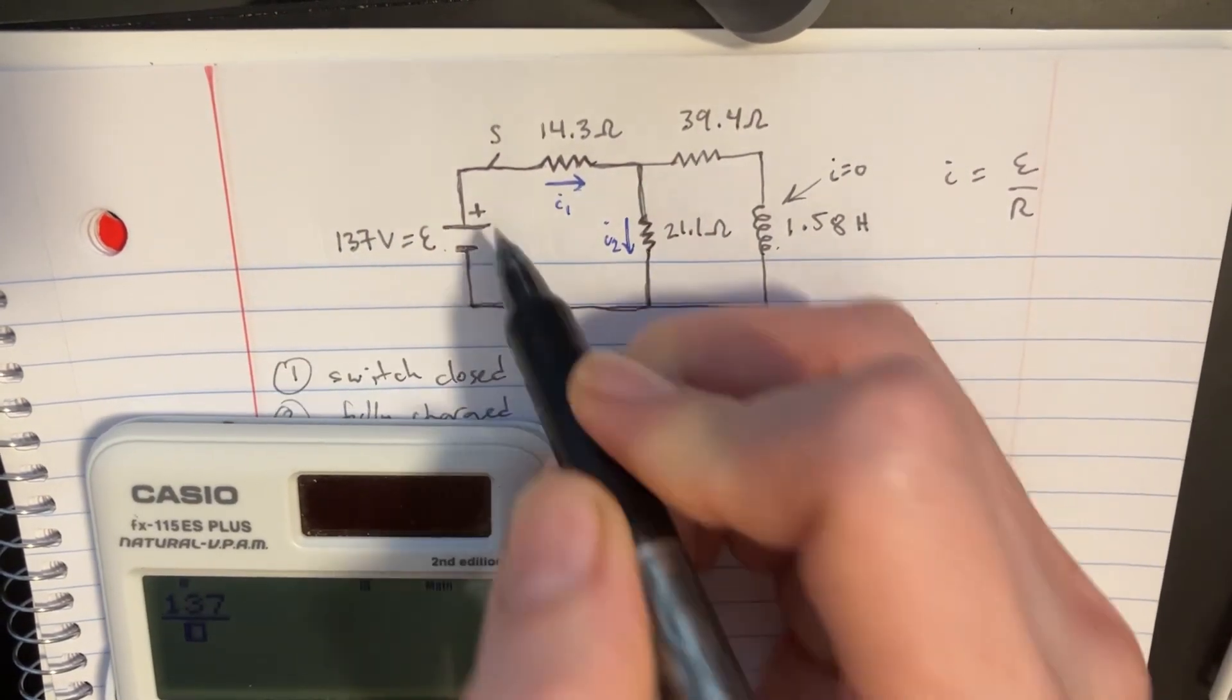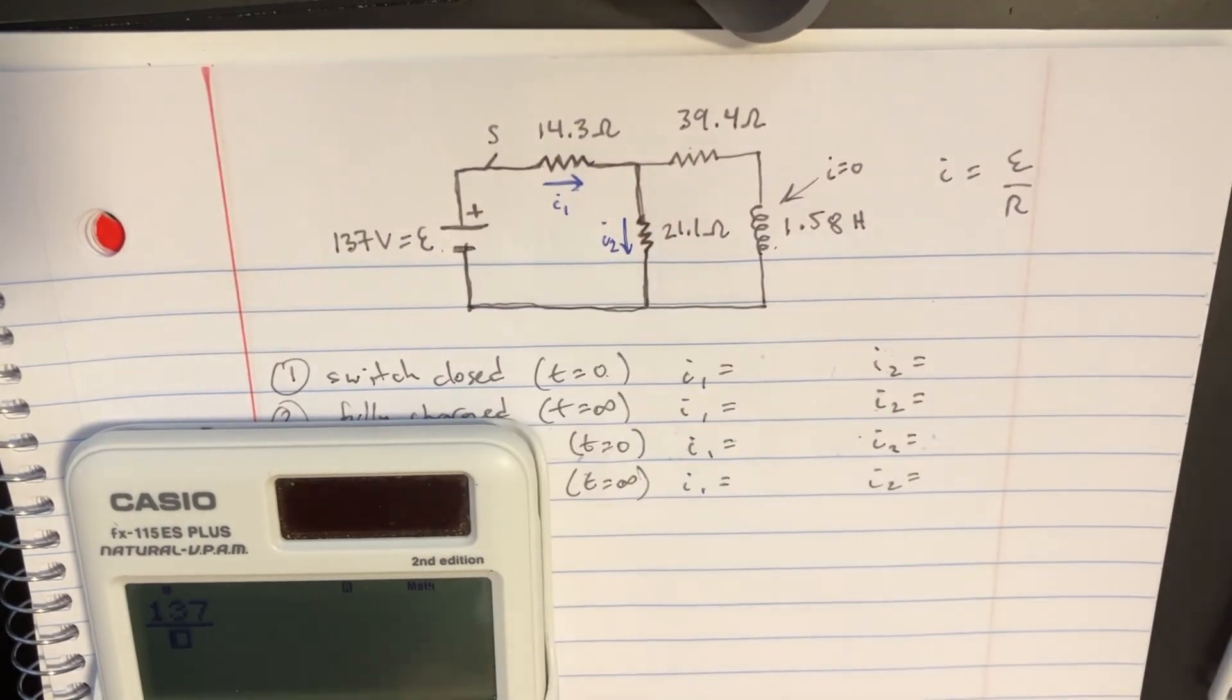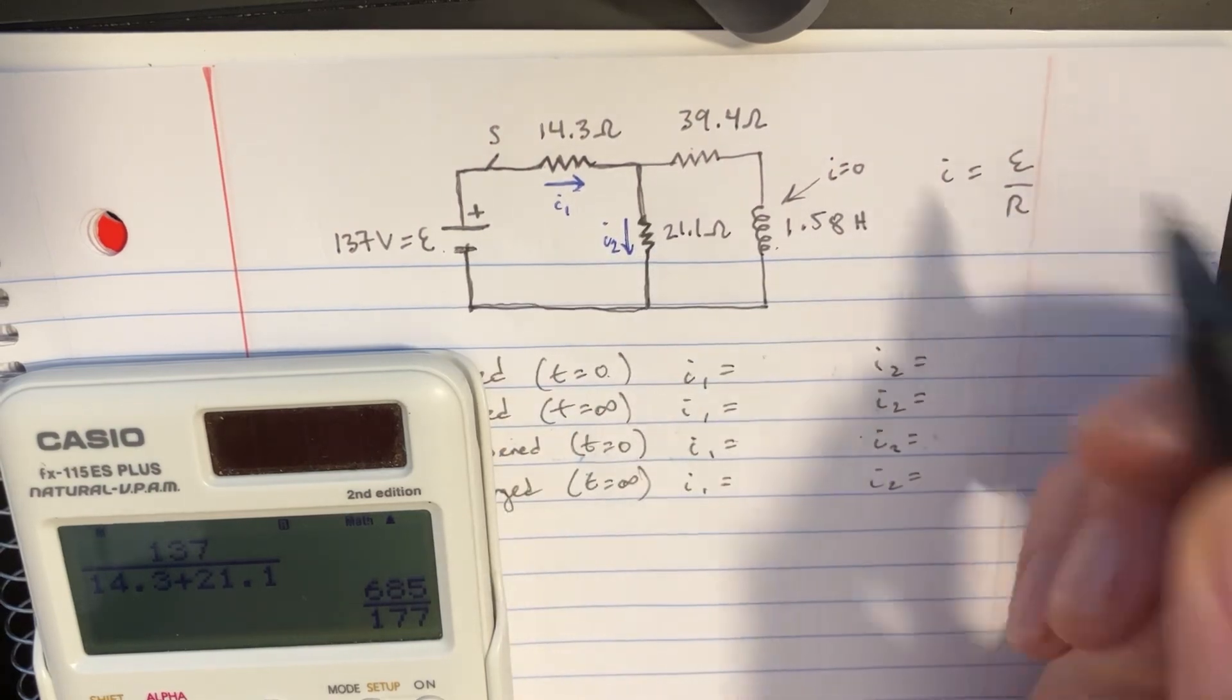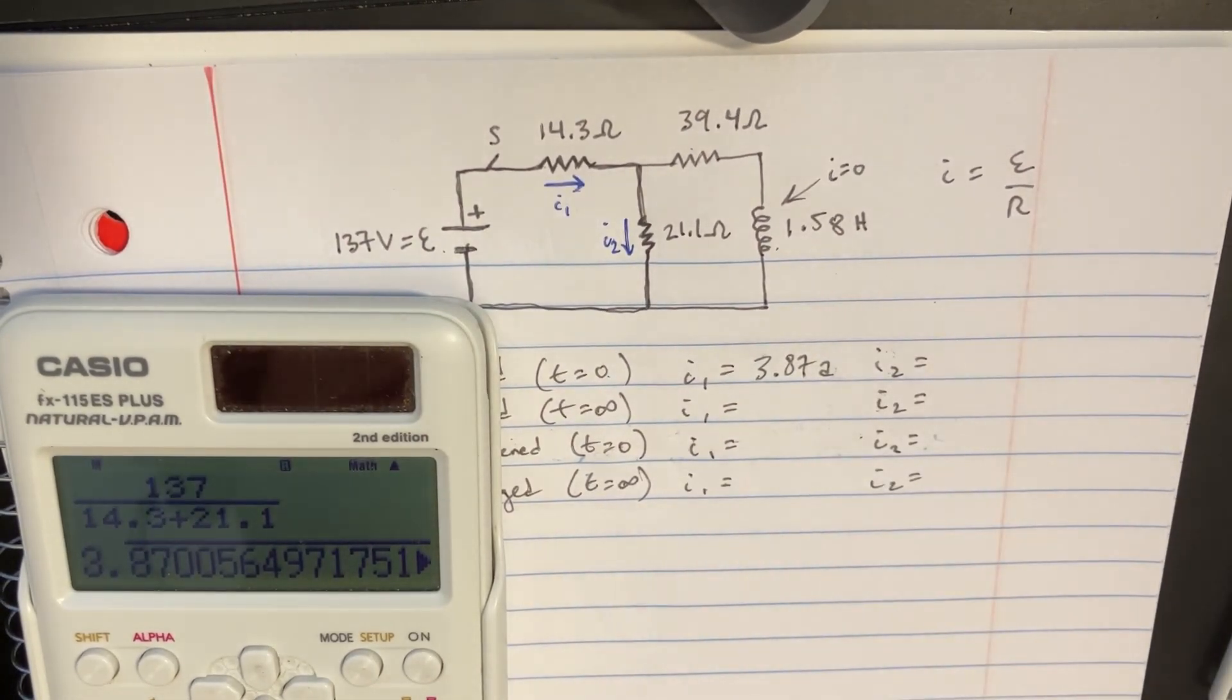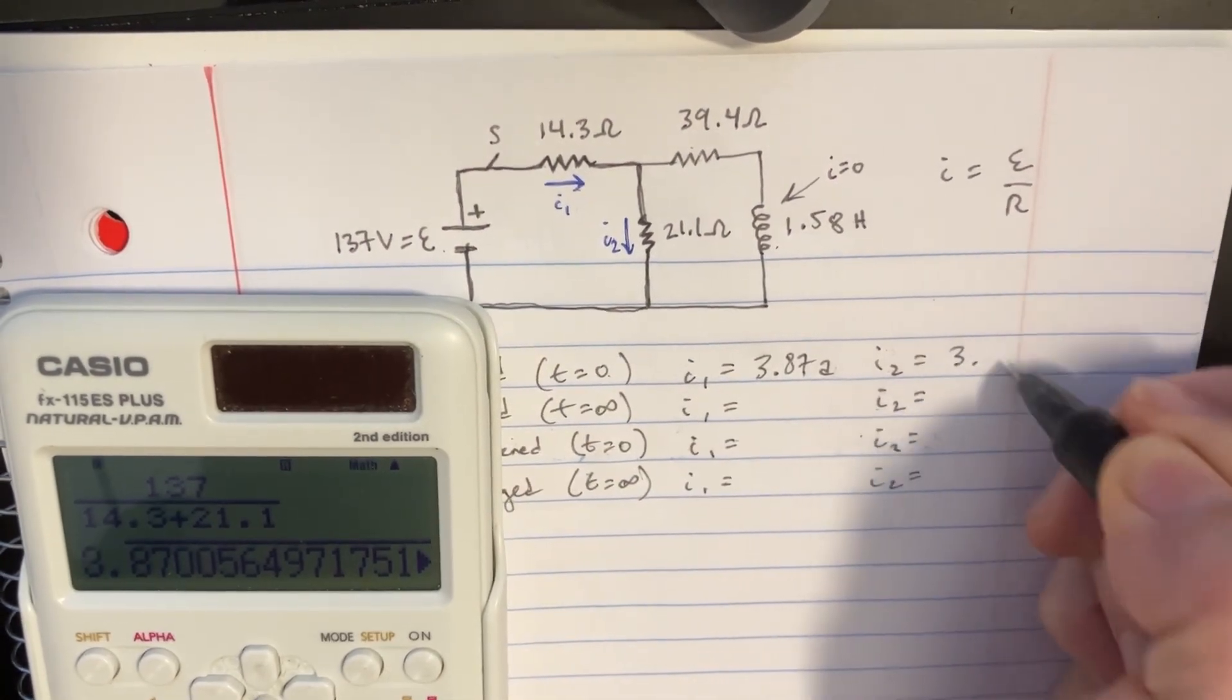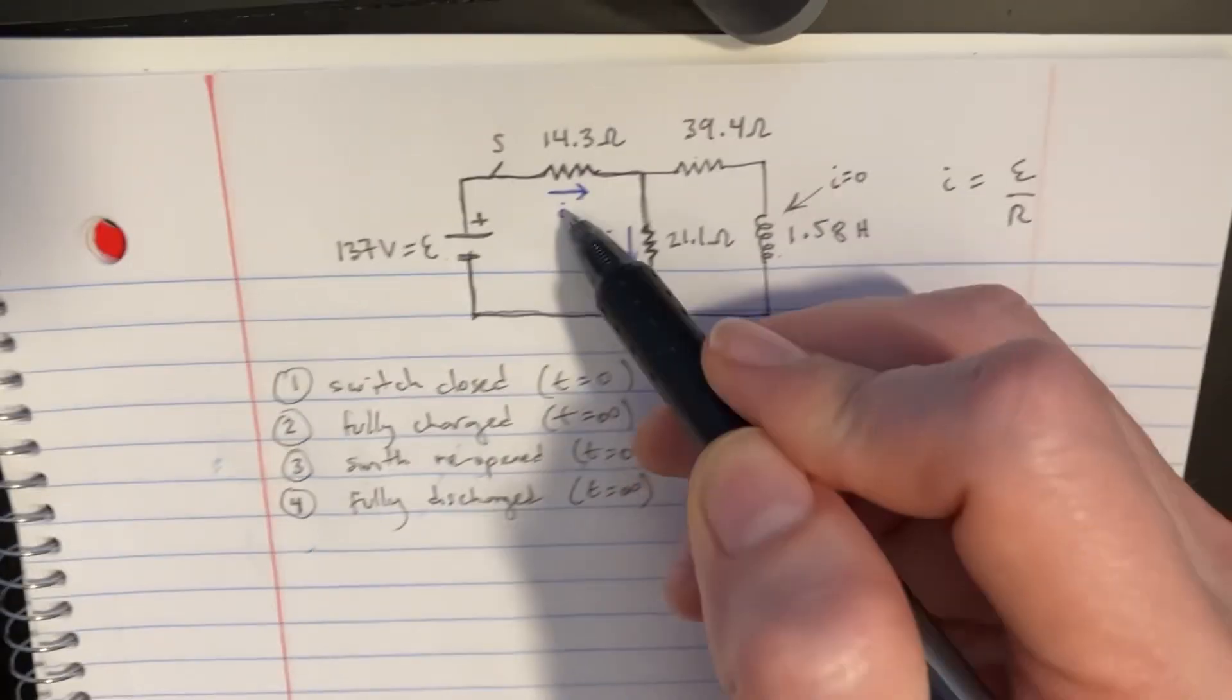And we're basically ignoring that right half for now. This stuff has no current, so we can cover that up. Now ask yourself, what's the resistance in here? It's actually the total resistance of both of those. So we're going to add 14.3 plus 21.1. And so the current through this whole section is actually going to be 3.87 amps. And because I2 is a part of this whole thing, those are actually going to be the exact same. So 3.87 amps is correct for both of those.